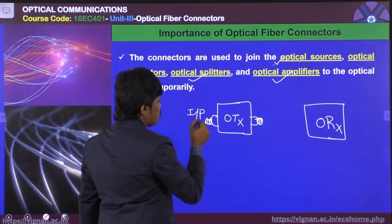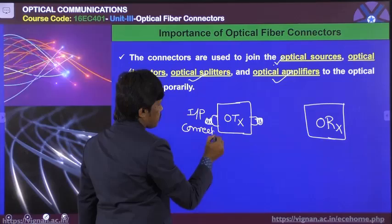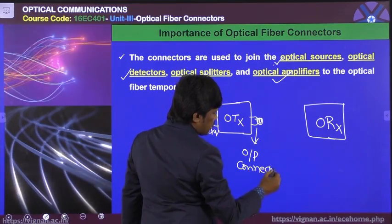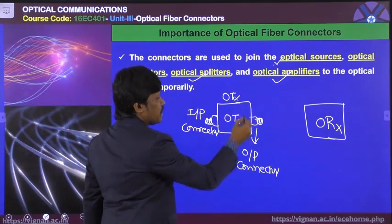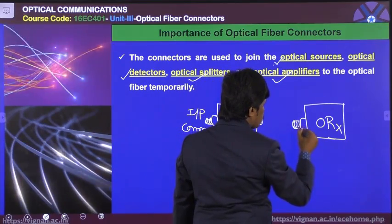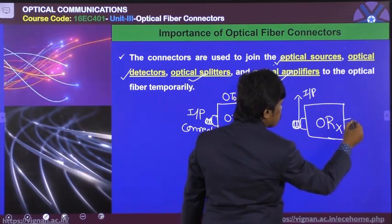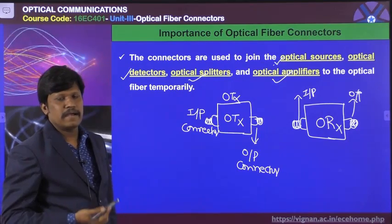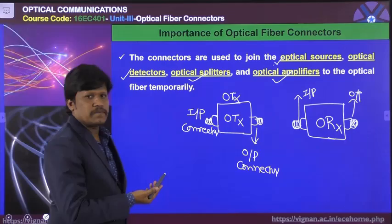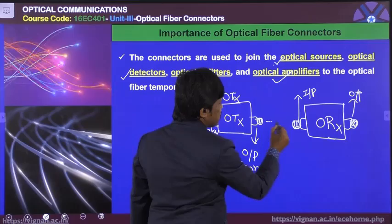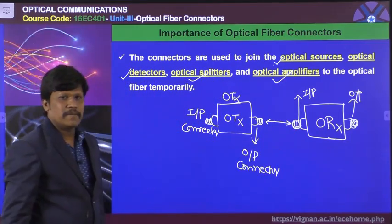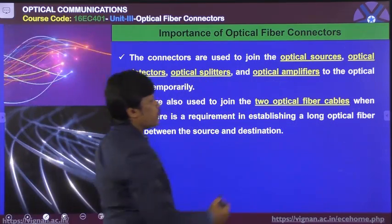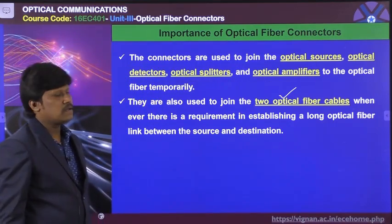We have an input connector and output connector at the optical transmitter. At the same time, we have an input connector and output connector at the receiver. We need to establish a link between transmitter and receiver to connect them with optical fiber cable. Connectors are also used to join two optical fiber cables.